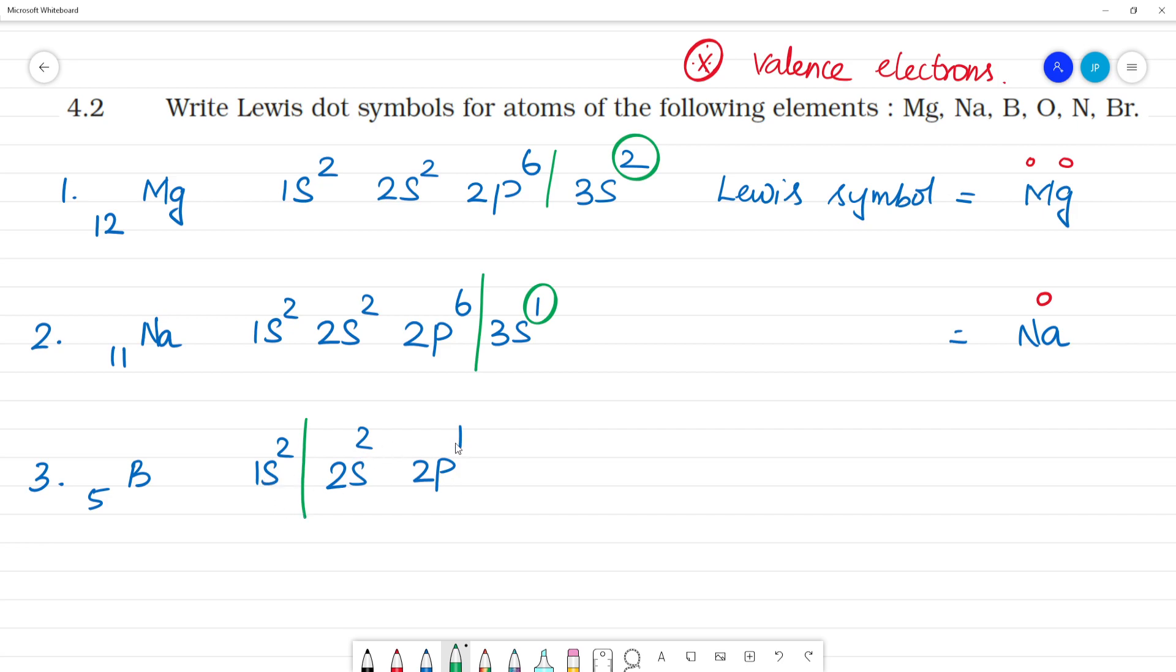1s is the inner electrons. 2s and 2p is the outer electrons. Everything is the same. How many electrons here? 2 plus 1, that's totally 3 electrons.